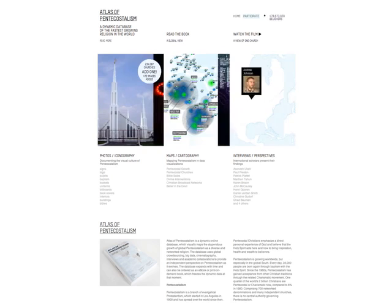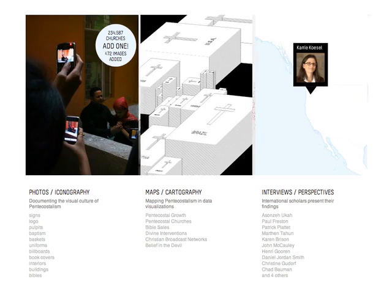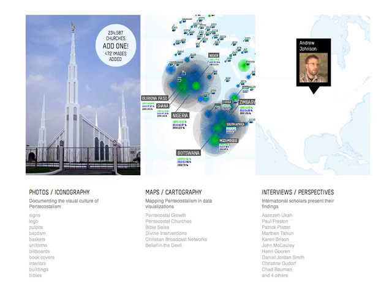The database consists of three main categories: Iconography, a photo database documenting the visual culture of Pentecostalism; Cartography, a set of interactive maps and data visualizations that aim to map Pentecostalism as it grows; and Interviews, a growing set of interviews with international scholars about their research.